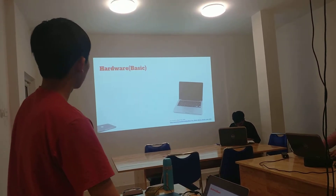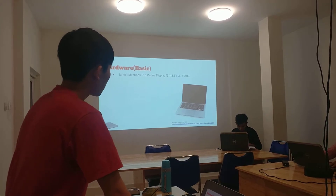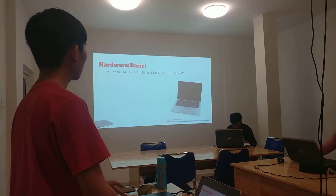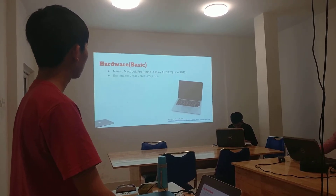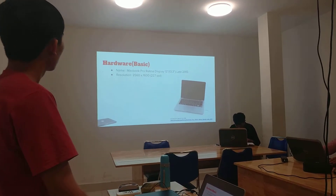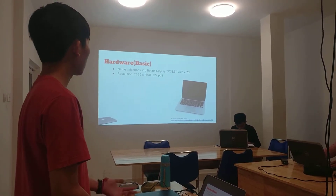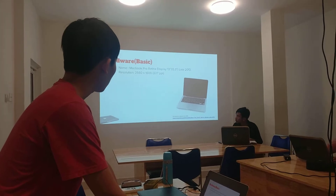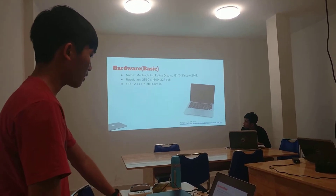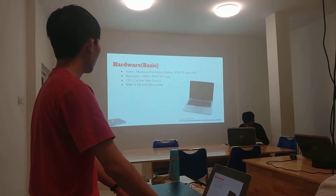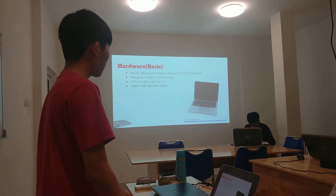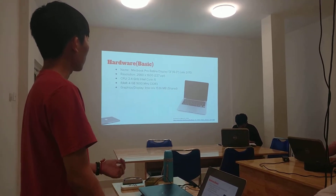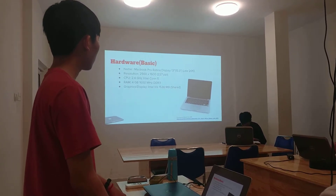So let's see some basics. The name is MacBook Pro Retina Display, 13-inch — or more accurately 13.3-inch — late 2013 model. Resolution is 2560 by 1600, 227 pixels per inch. The CPU is 2.4 GHz Intel Core i5. RAM is 4 GB, 1600 MHz, DDR3. Graphics is Intel Iris 1536 shared VRAM.